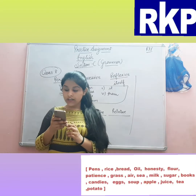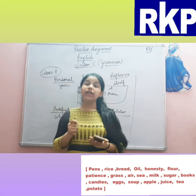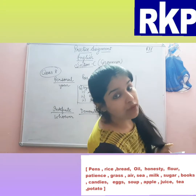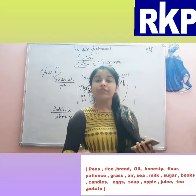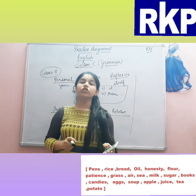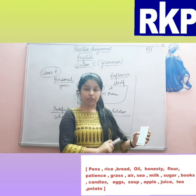Question 7 is to sort the nouns into countable and uncountable nouns. Countable nouns, as you all know, can be counted, and uncountable nouns cannot be counted.